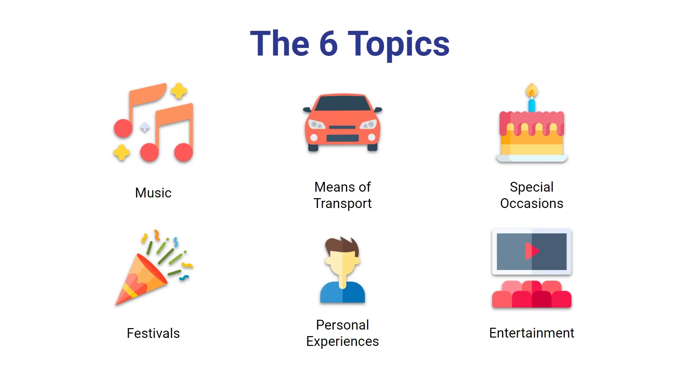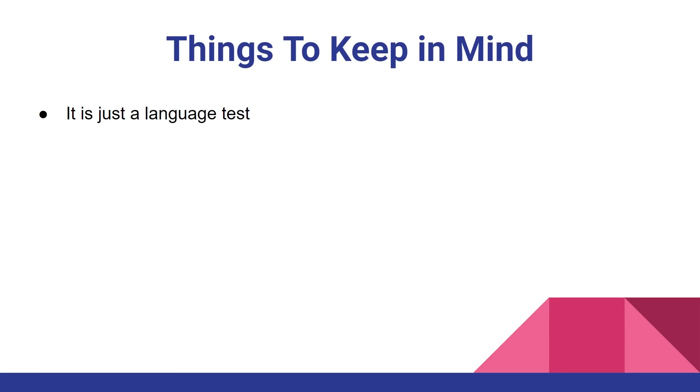Now that you know the six topics that the examiner can choose from, let's talk about some things to keep in mind. First of all, the B1 test is just a language test. The examiner is there to test your English language skills, so it doesn't matter if your answer is not 100% accurate as long as the English is correct. Asking to repeat or explain a question is also okay. The examiner is there to help you out, so don't be shy if you don't hear a question or don't understand it at first.